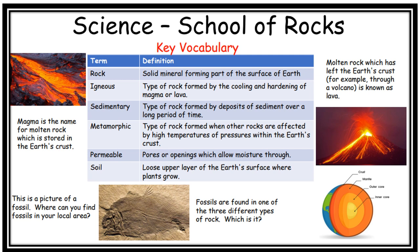We've got: magma is the name for molten rock; fossils are found in one of the three different types of rock — which is it? The children should know. We did lots of work last year on Wren's Nest and the fossils there. Ask your child what type of rock fossils are found in — they should know.